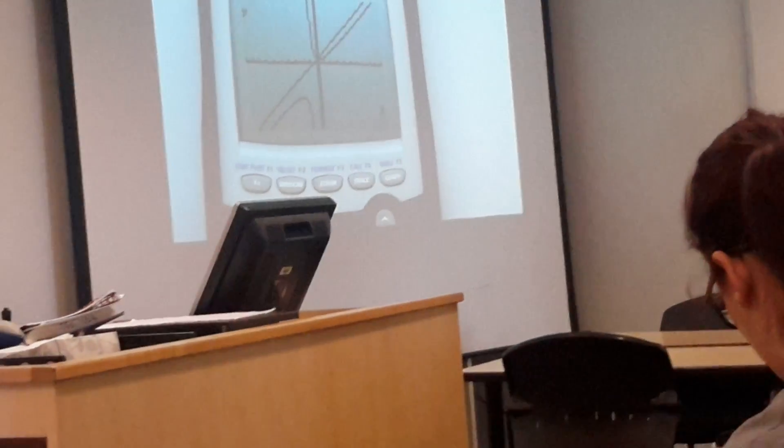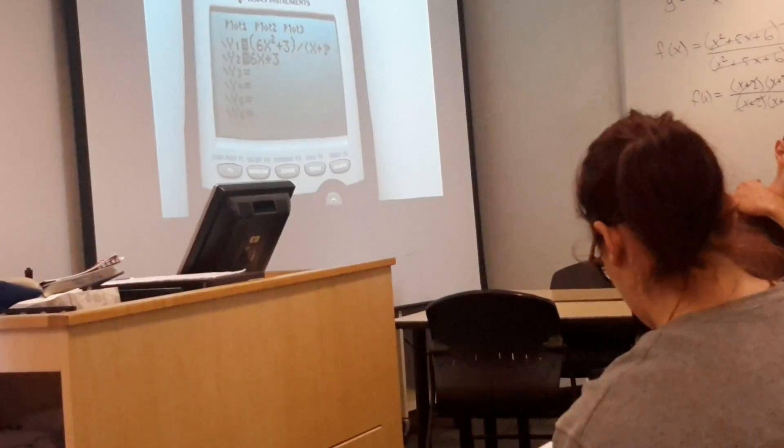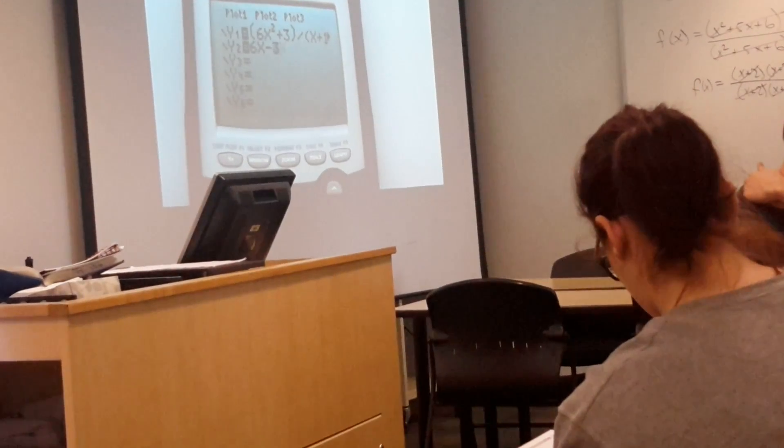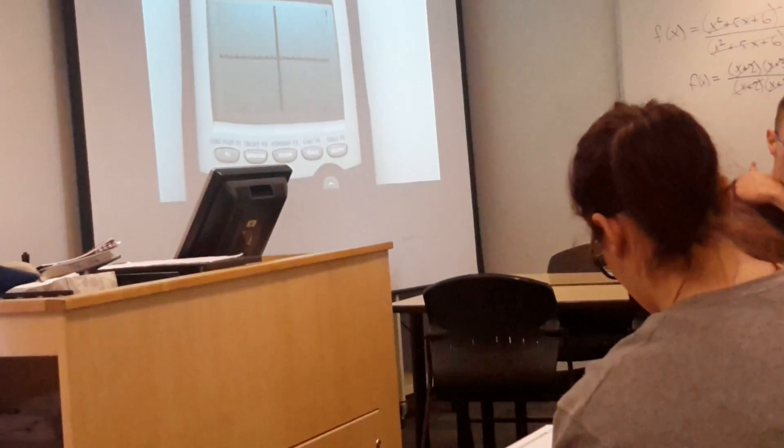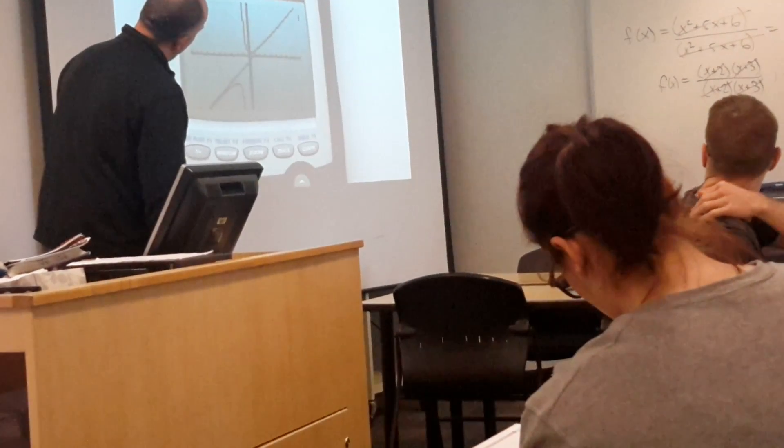So now if I come back over here and I graph the line y equals 6x minus 6. So that remainder is irrelevant. For the asymptote. And there it is.